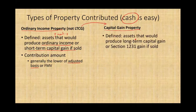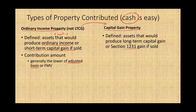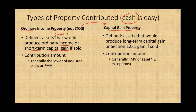Capital gain property is defined as an asset that would produce long-term capital gain or section 1231 gain if sold — an asset held more than a year. The contribution amount for capital gain property is generally the fair market value of the asset. We have two exceptions to this, which we'll discuss later. If the fair market value is lower than the basis, you'd still use the fair market value.